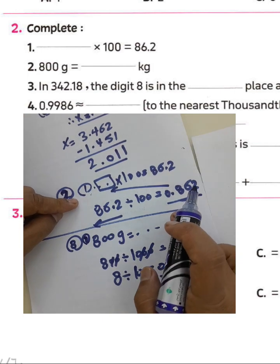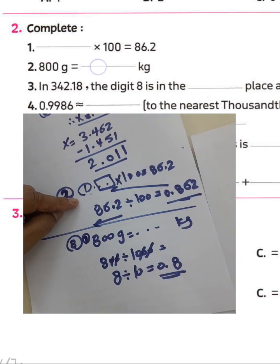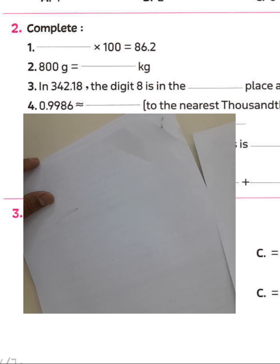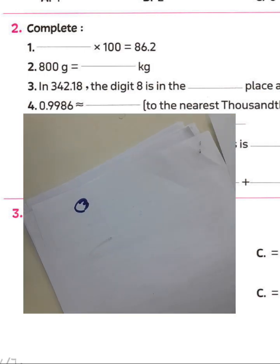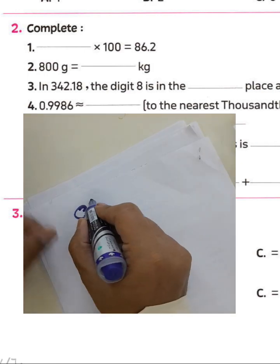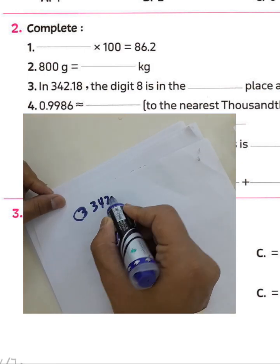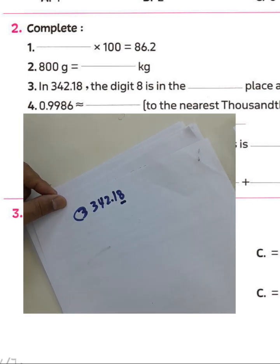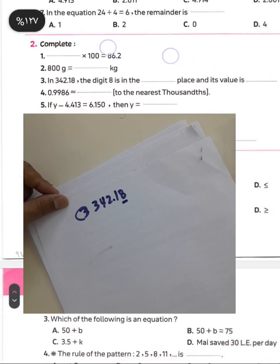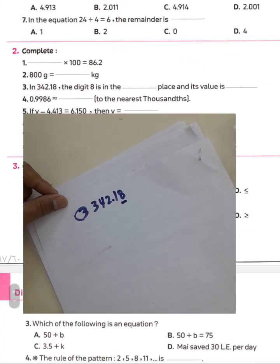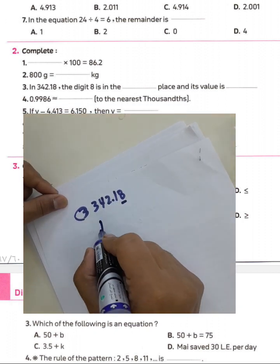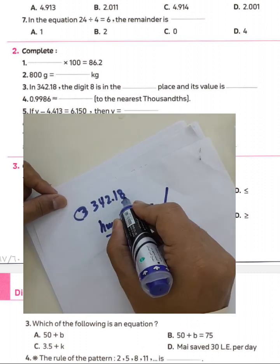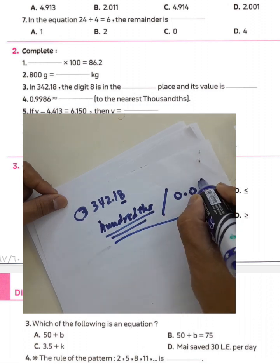In the number 1,342,800 (three hundred forty-two thousand, eighteen hundred-fifth), the digit 8 is in the hundreds place and its value is 800.